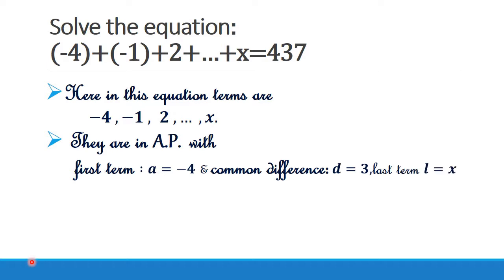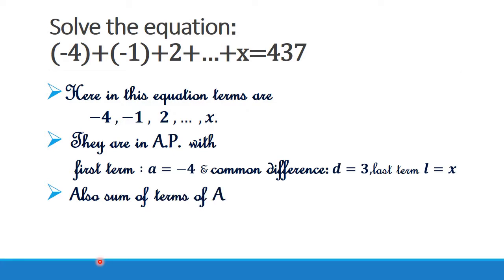We have to find the last term in this AP in order to solve the equation. Also, a piece of information is given: the sum of terms of the AP is equal to 437.